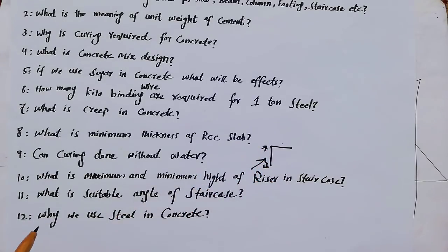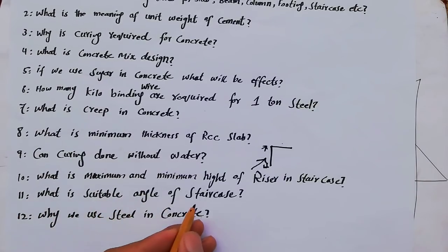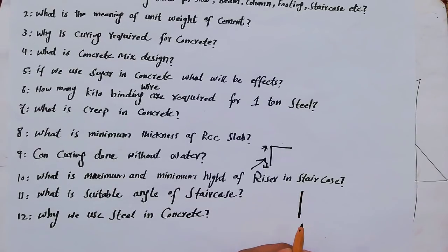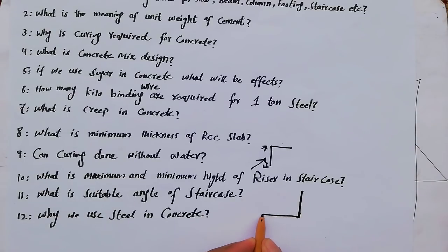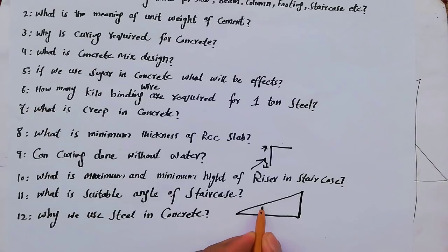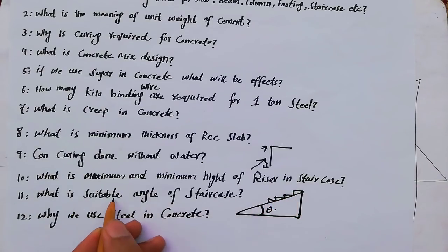The eleventh question is: what is the suitable angle of a staircase? Suppose this is the wall or column, and this is the running length for the staircase — what will be the suitable angle for the staircase? You can see the staircase here and determine what the suitable angle would be.